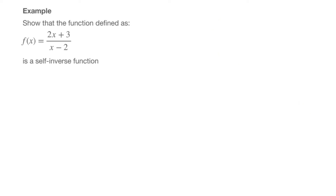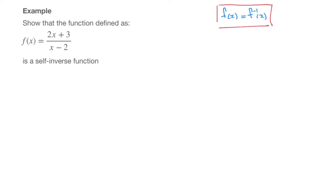We say that a function f of x is a self-inverse function if it's equal to its own inverse. In other words, with self-inverse functions, when we try and find the function's inverse, we'll find that it's equal to the function we started off with. And that's what a self-inverse function is.